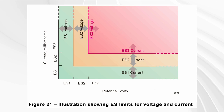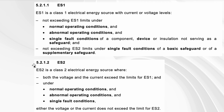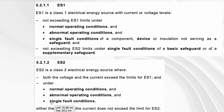ES2 itself exceeds ES1 in at least one dimension, but in all conditions either the voltage or the current does not exceed the ES2 limits. If one of them — voltage or current — exceeds the limit for ES2, even just in a single fault condition, then it is ES3. Basically, ES3 is everything worse than that.